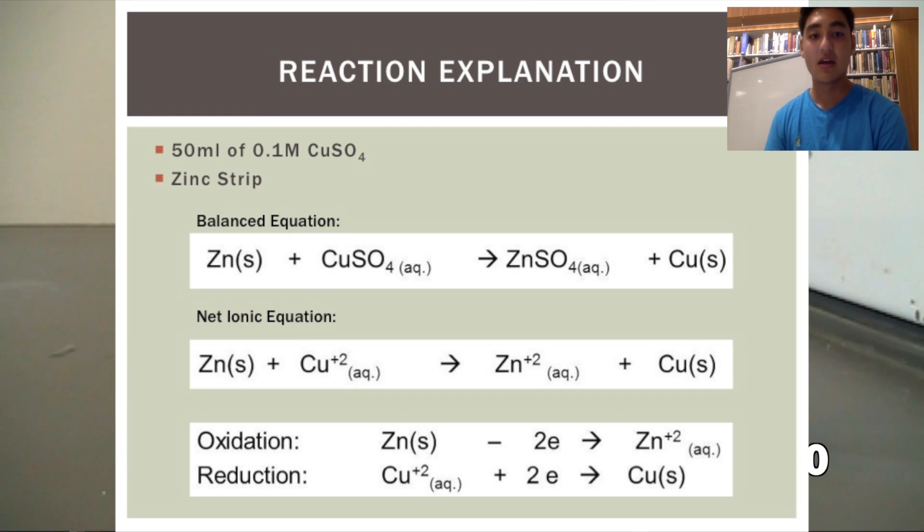In this reaction, copper is the oxidizing agent and zinc is the reducing agent, since the copper ion has a reduction potential of 0.15 volts, which is greater than zinc ions with a reduction potential of negative 0.76 volts.